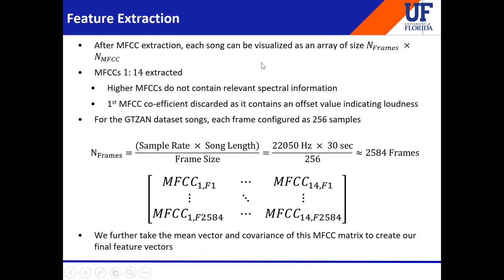Now we'll talk about how we represent MFCC features as feature vectors. After extracting MFCCs from the songs, each song is visualized as an array where each row corresponds to one frame of the song. With our sampling rate and frame size, we have 2,584 frames. Each frame has 14 MFCC coefficients — we extracted 15, but the first was discarded as it contains only offset values, and higher MFCCs don't contain relevant spectral information. So in essence, we used a matrix of size 14 by 2,584 as our feature vector for each song.